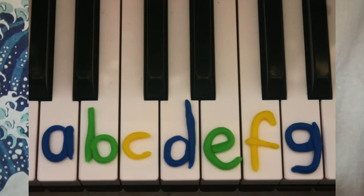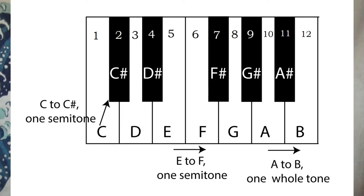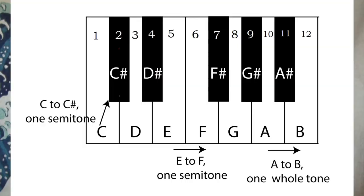The black keys are always written in relation to the white keys. If we're looking at the D key, the black key right in front of it is a semitone higher than D, which makes it D sharp. Something that is sharp is slightly higher in frequency than the note it's referencing — so D sharp is slightly higher than D, whereas D flat would be slightly lower than D. D flat could also be considered C sharp — they're one and the same thing.